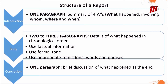The body of the report contains two to three paragraphs dealing with details of what happened in a chronological order. You use only factual information and a formal tone. You use appropriate transitional words and phrases to link your ideas and the sequence of events as they occurred during the incident or event.